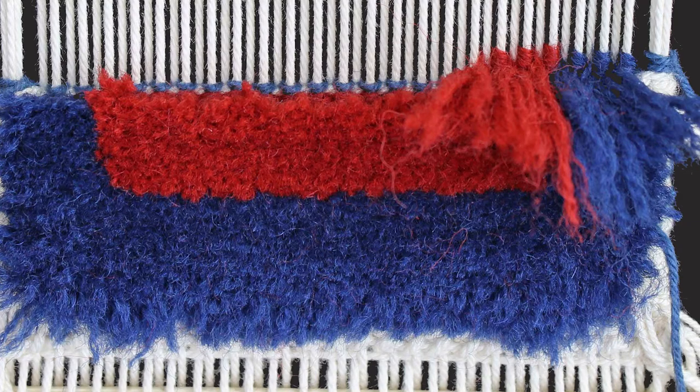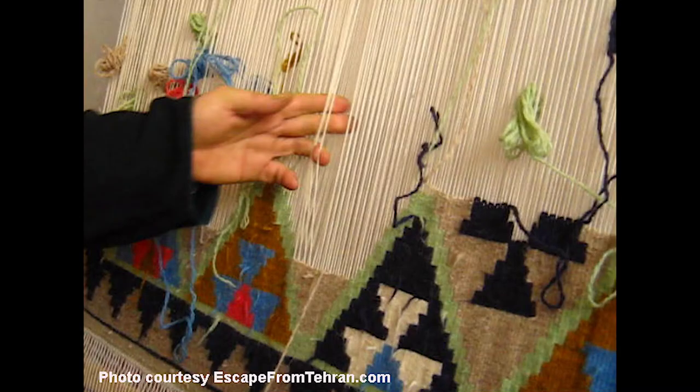When weaving a hand knotted rug, you will need a lot more tension than if you're weaving a killeen. Some weave a killeen by running the material through the warps using their hands. In that case, your warps will need to be much looser.